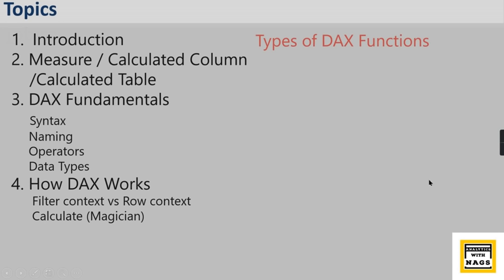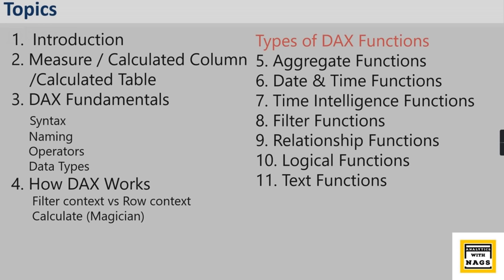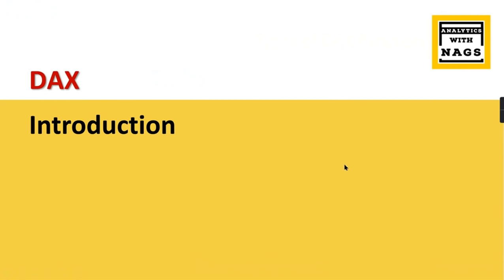Then we'll cover how DAX works — filter context and row context — and how the CALCULATE function helps us do all the magic. Moving on to types of DAX functions: aggregate functions, date and time functions, time intelligence, filter functions, relationship, logical, and text functions. These cover the predominant functions used in most projects. Finally, we'll conclude with everything we've covered.